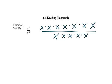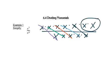Anything that matches on the top and the bottom we can cross through. So we can cross through that x, that x, that x, that x, and that x. That leaves us with just two x's, or x squared, on the top.